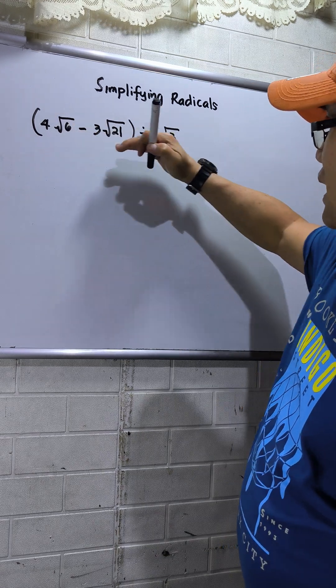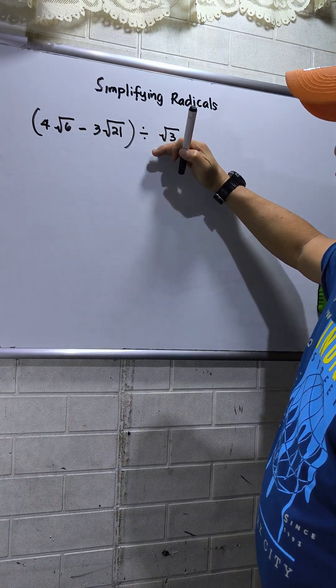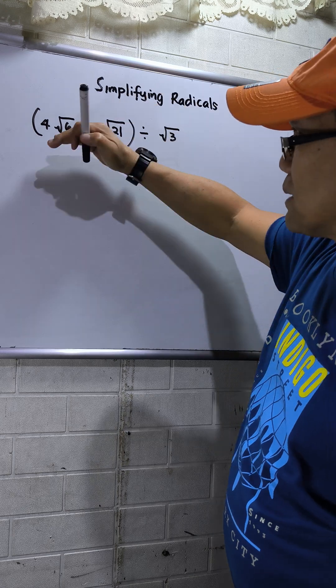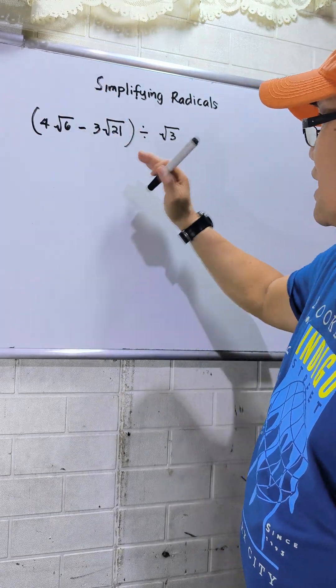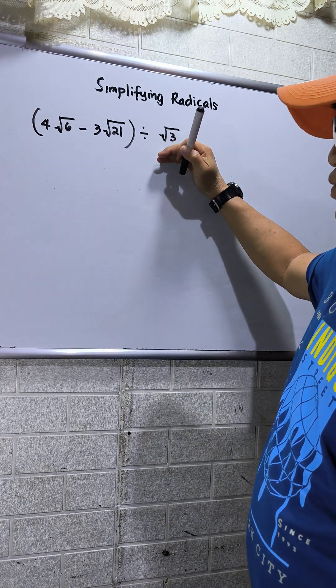Take note, this is our dividend, and this is our divisor. Note that it must have square root of 3 for the first and the second so that we can divide by square root of 3.